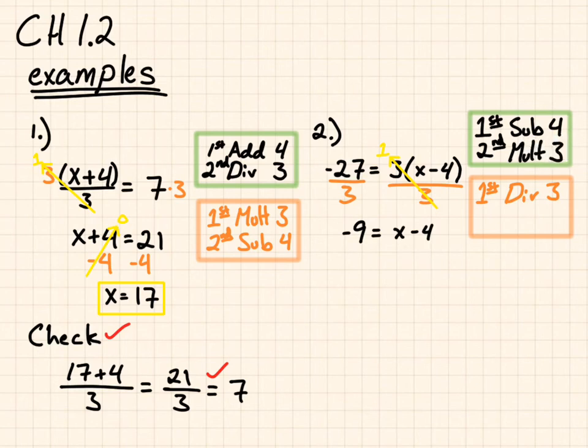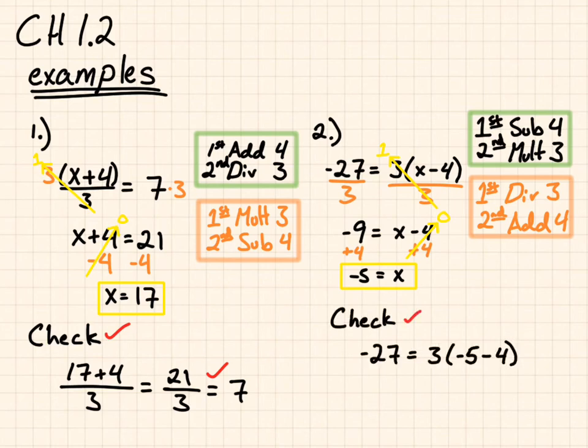So, instead of subtracting 4, I can add 4 to both sides. And I end up with x equals negative 5. And I can check my work.